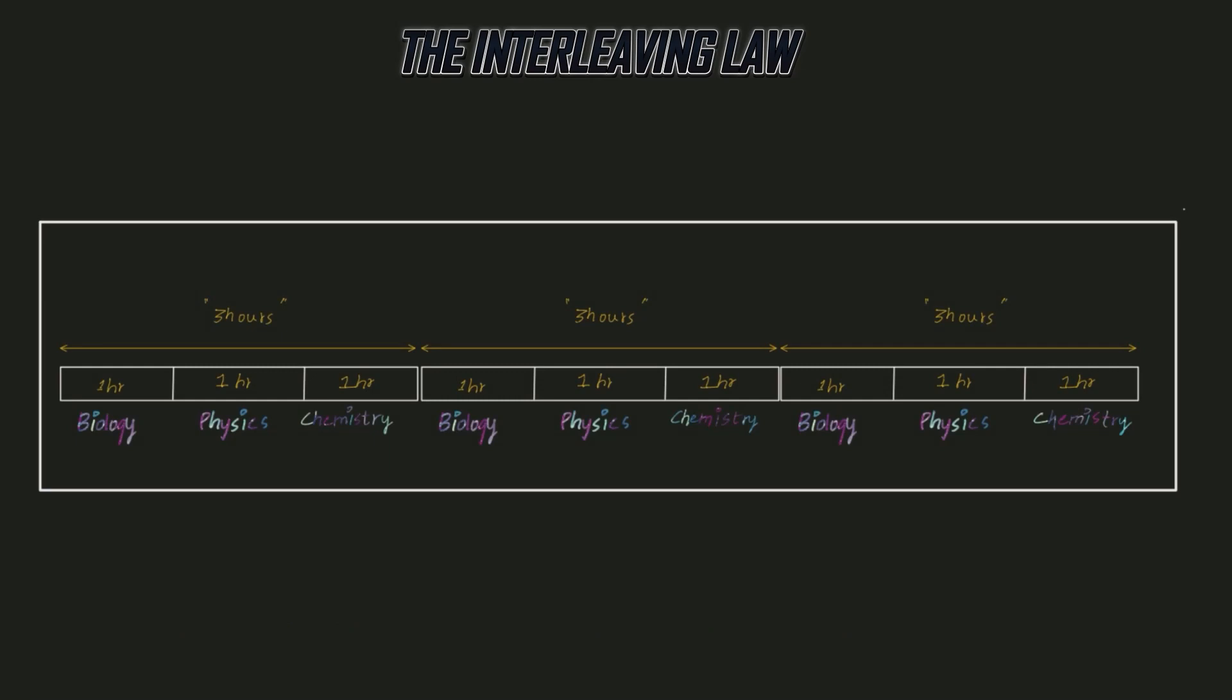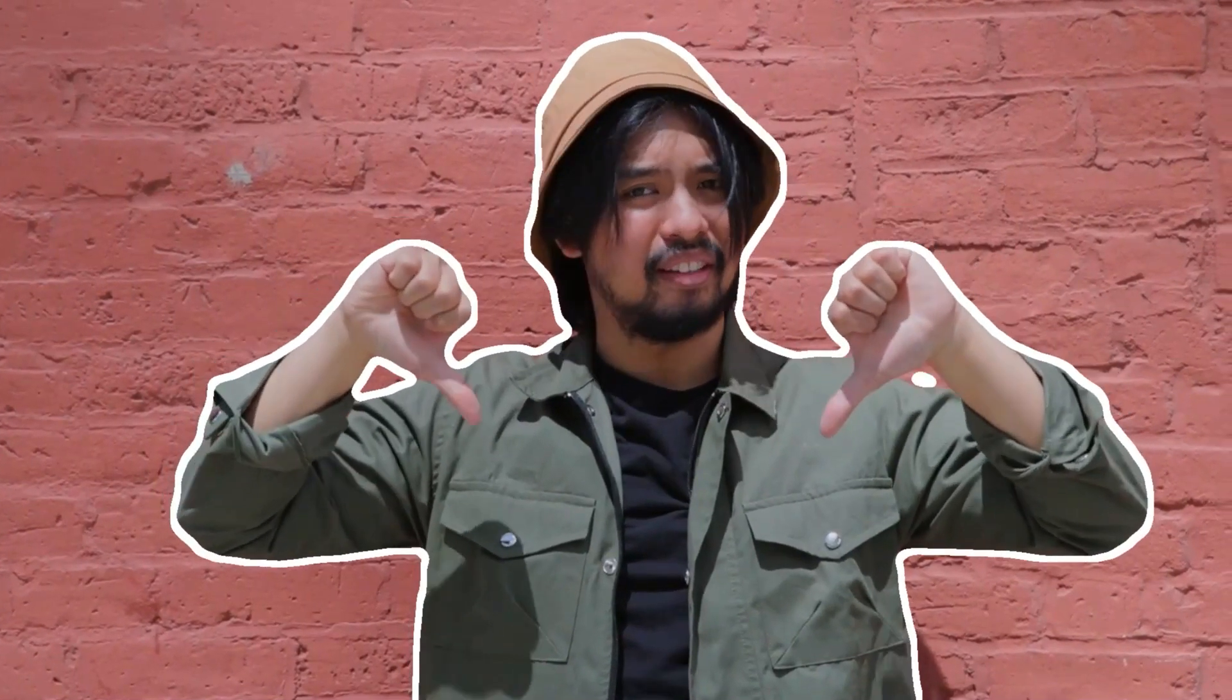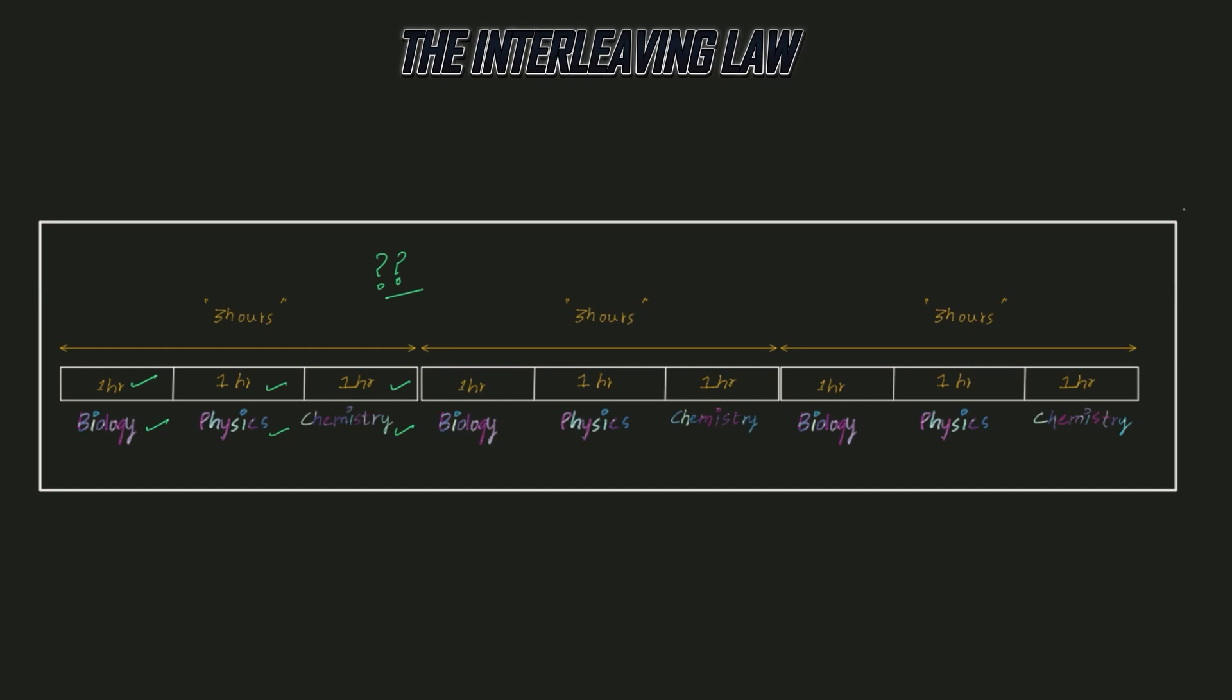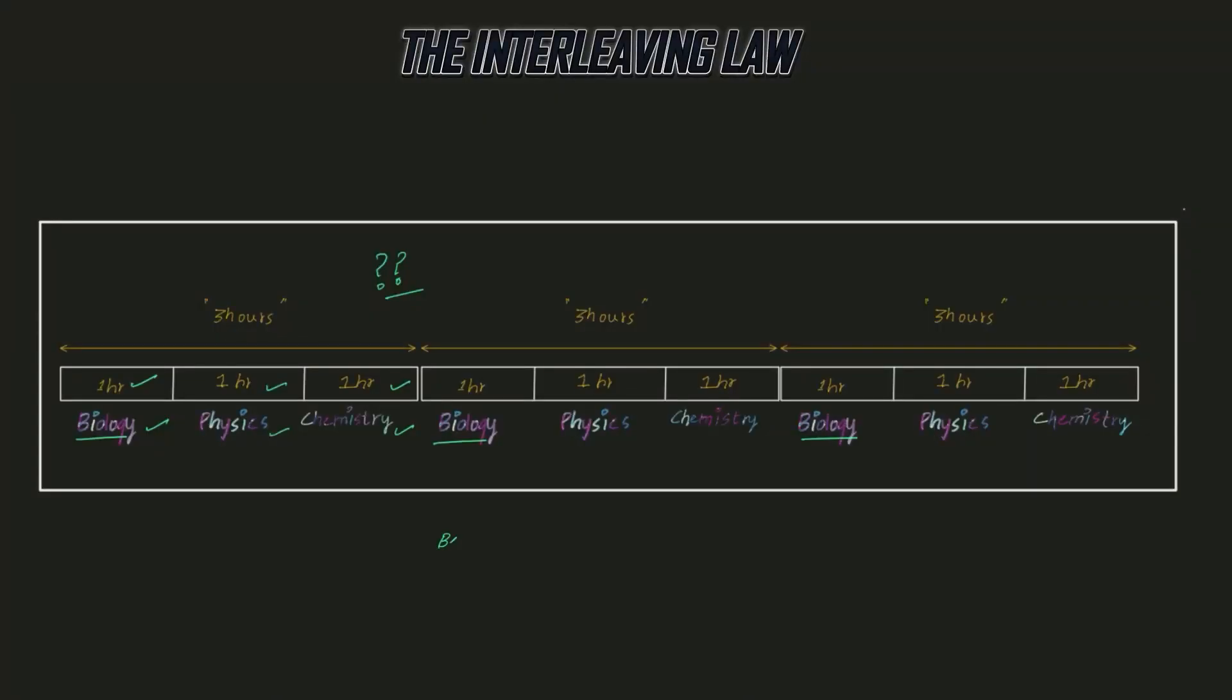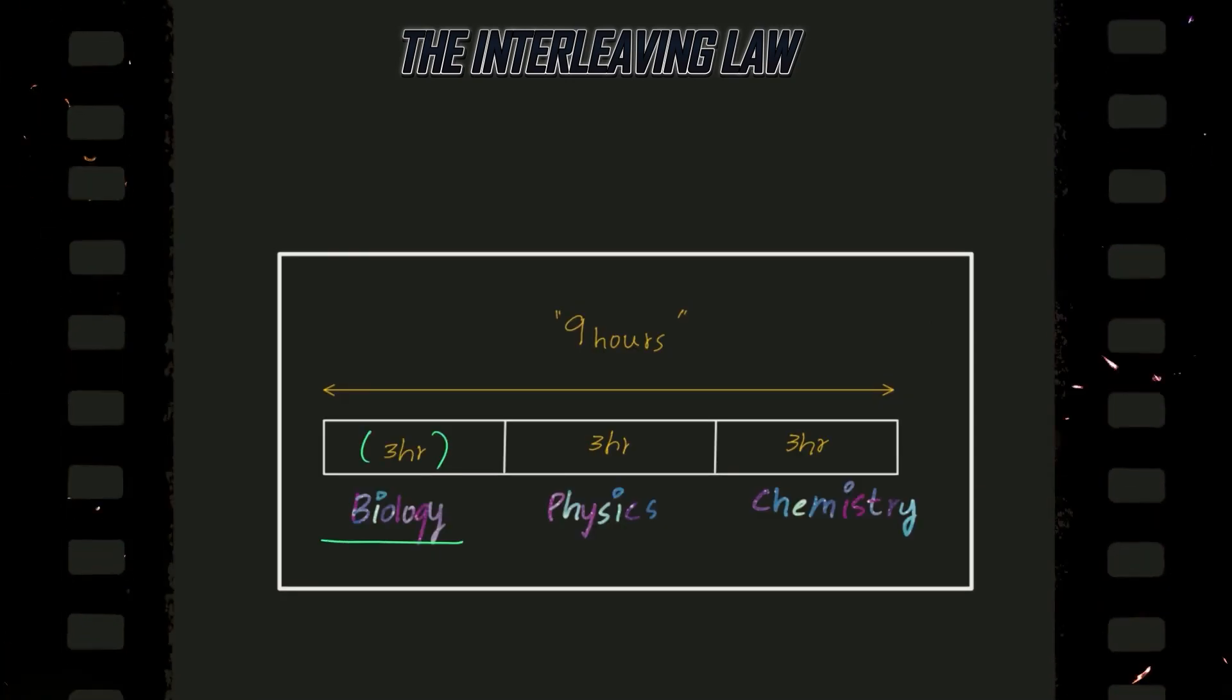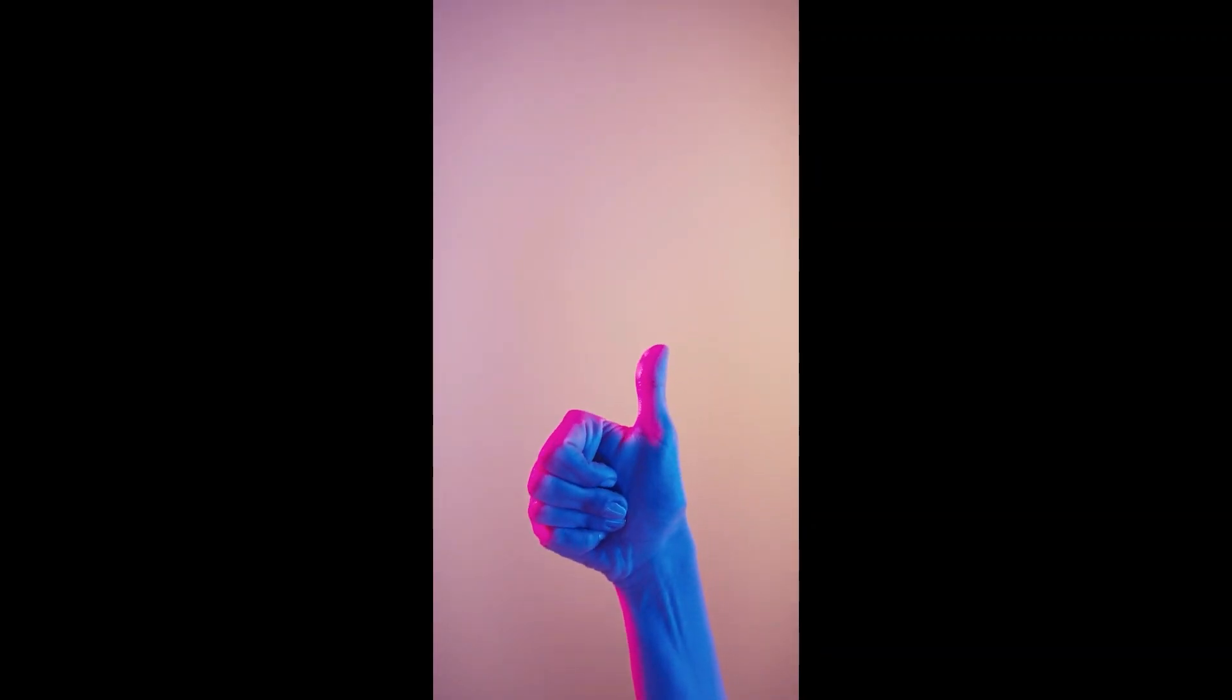But you can also try studying like this: instead of spending complete 3 hours on one subject, spend 1 hour on biology, 1 hour on physics, and another hour on chemistry. You may think it will slow you down and make it less effective for learning. But our brain doesn't work that way. When you study one subject during different parts of the day, your brain knows you need this information later, so it processes the information in the background. When you study for 3 hours continuously, your brain processes the information only for 3 hours. But with this method, you can process the same information for 7 hours. By repeated practice after spaced intervals, you can make the signals in your brain much stronger, helping you retain information for a very long time. This is the secret.